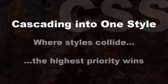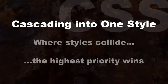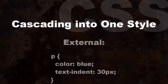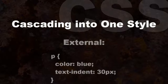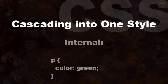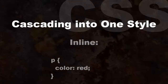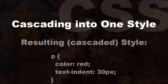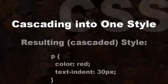For all style information that uses the same selectors, the highest priority replaces the lower ones. For example: external has p { color: blue; text-indent: 30px; }, internal has p { color: green; }, and inline has p { color: red; }. The final computed style turns out to be p { color: red; text-indent: 30px; }.